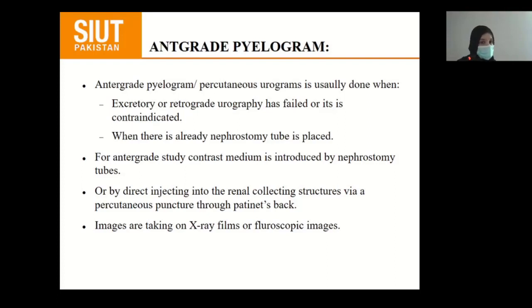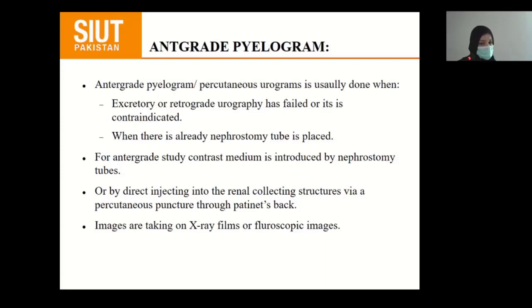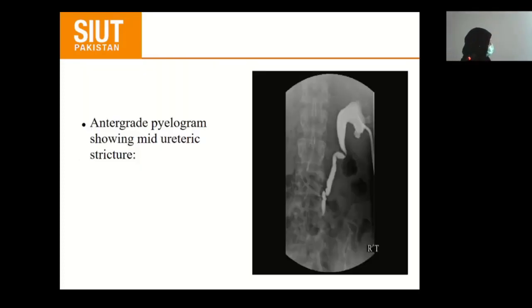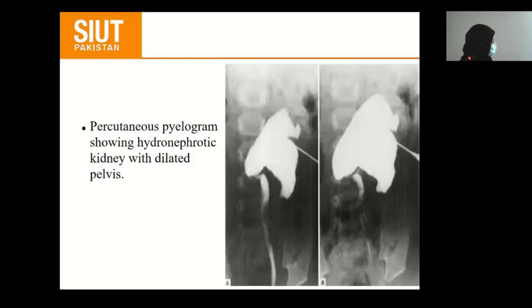Antegrade pyelogram: the antegrade pyelogram or percutaneous urogram is usually done when excretory or retrograde urography has failed, is contraindicated, or when a nephrostomy tube is already in place. For the antegrade study, contrast medium is introduced through the nephrostomy tube or by direct percutaneous puncture through the patient's flank into the renal collecting system. Images are taken on X-ray films or fluoroscopic images. This antegrade study shows bilateral ureteral strictures with no contrast in the bladder and a dilated upper system. Another image shows a mid-ureteric stricture with no contrast flowing into the bladder, and a percutaneous pyelogram showing grossly dilated hydronephrotic kidneys.